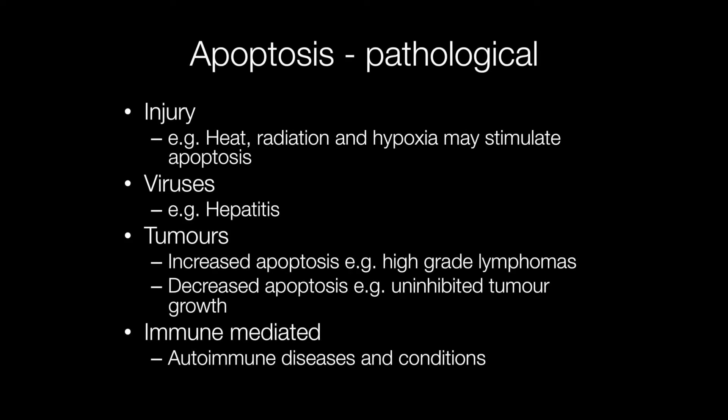Apoptosis comes into play when tissues are damaged or diseased. Cells injured through heat, radiation, or hypoxia stimulate apoptosis, as do virus-infected cells. The growth of rapidly proliferating tumours — for example, high-grade lymphomas — are kept in check to a degree by apoptosis. But if apoptosis is decreased in a tumour, this can lead to uninhibited tumour growth. Problems caused by autoimmune diseases and other conditions such as graft-versus-host disease may also be a result of apoptosis.